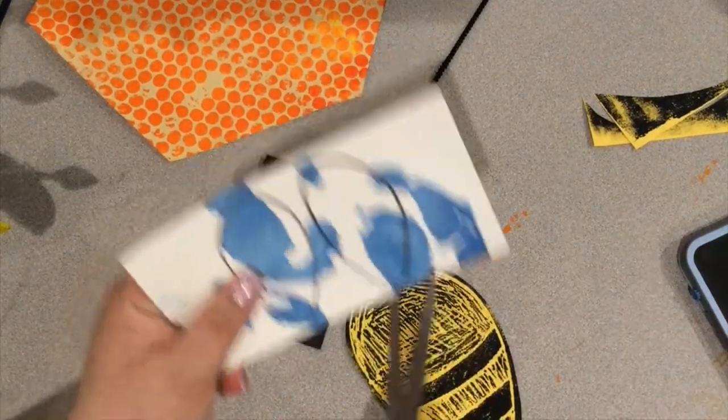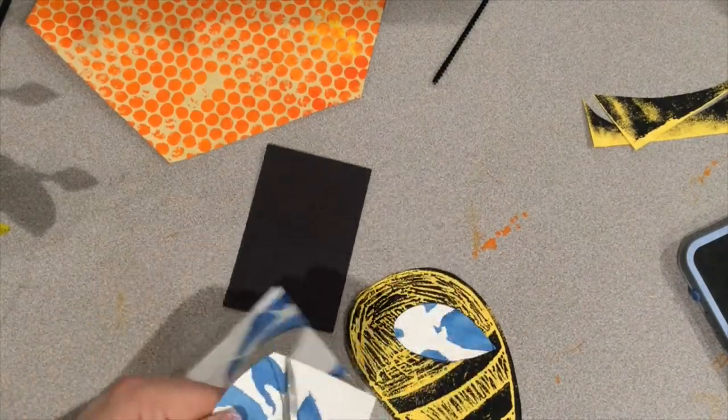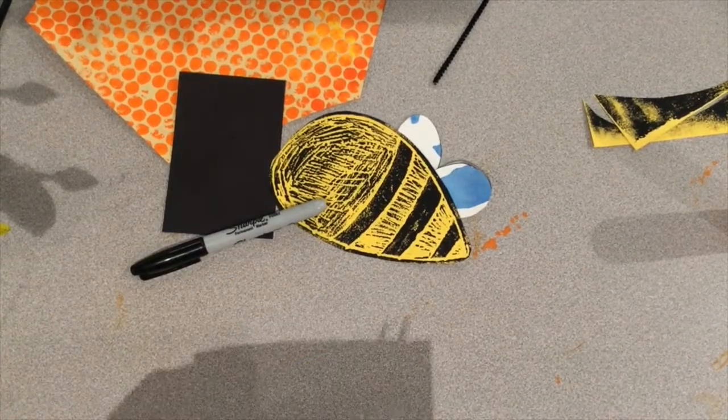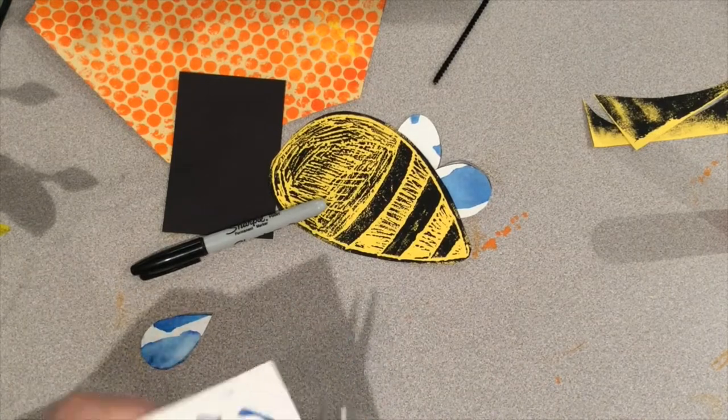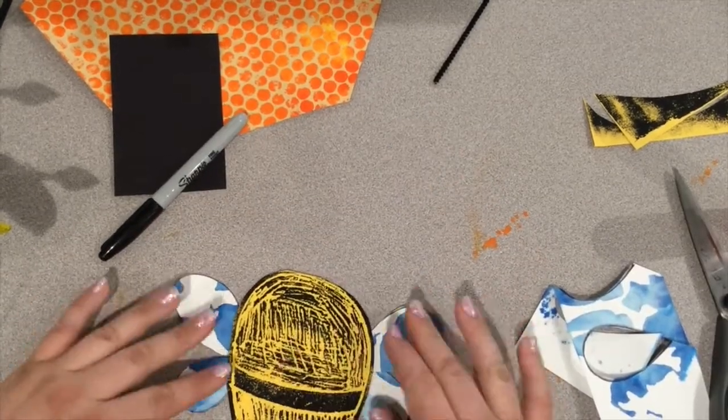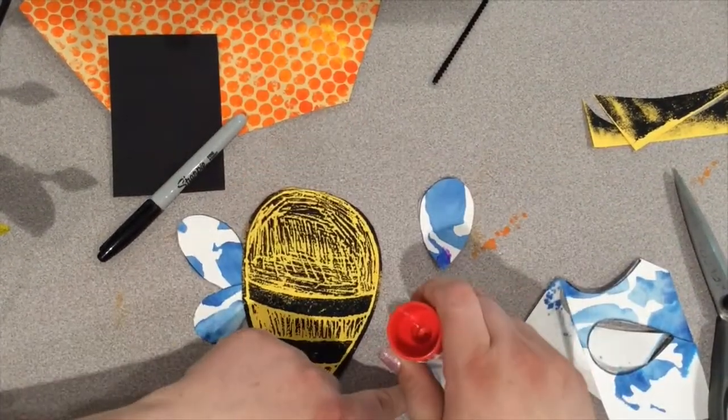Next, cut out your four wings. After your wings are cut out, you can go ahead and glue them onto the side of your bee.